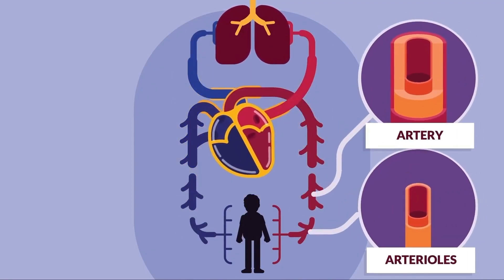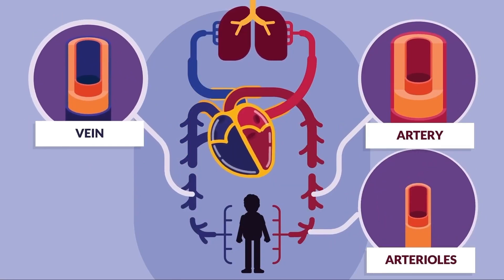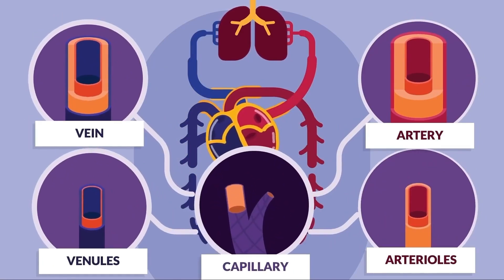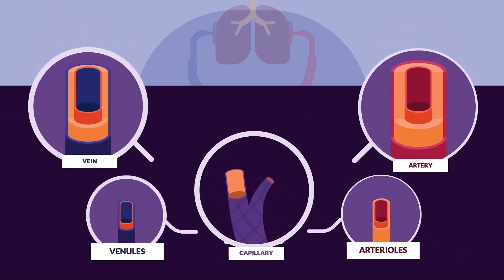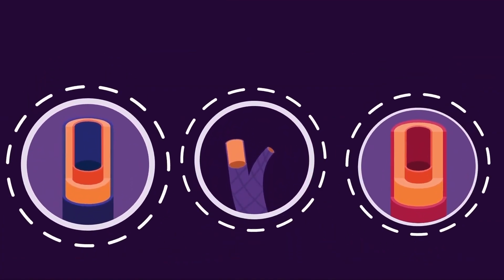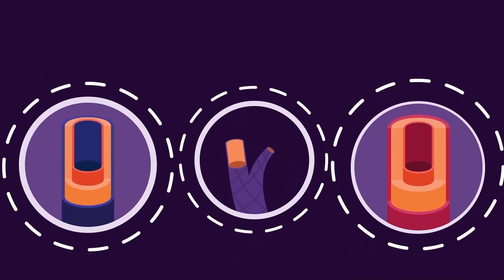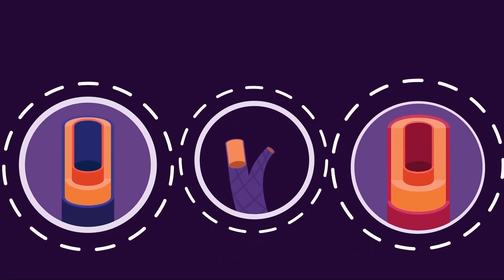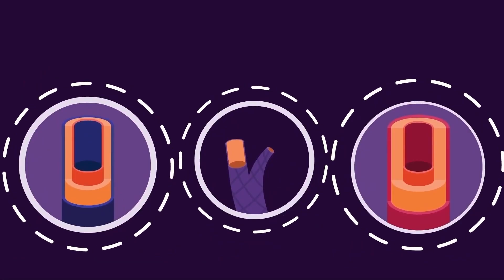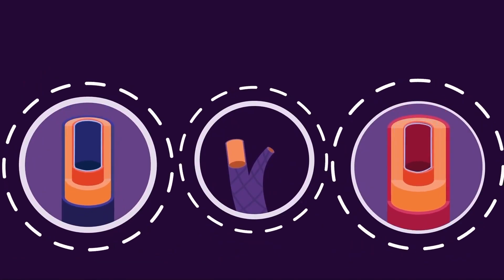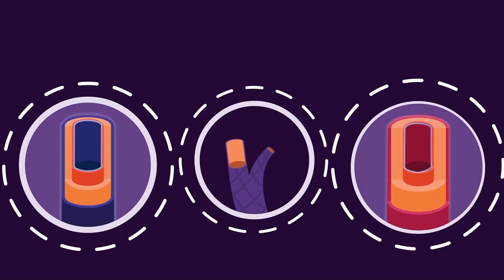The blood vessels consist of arteries, arterioles, veins, venules, and capillaries. When we do a cross-section of arteries and veins, we can see that both of them have common structures, like an outer wall, elastic muscle, and a lumen in the middle.